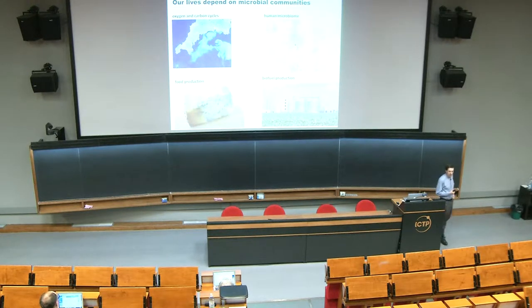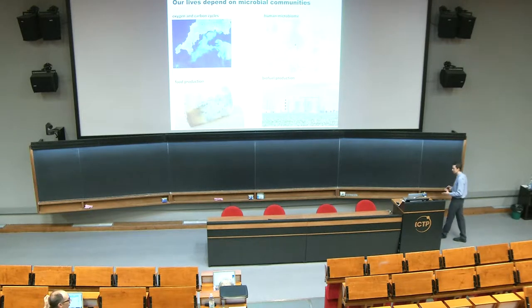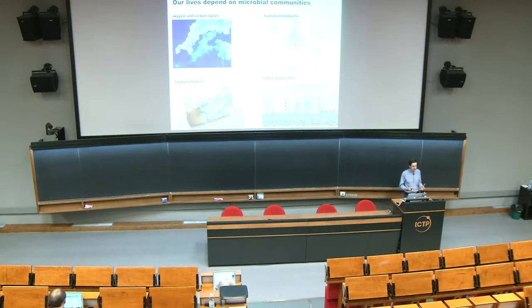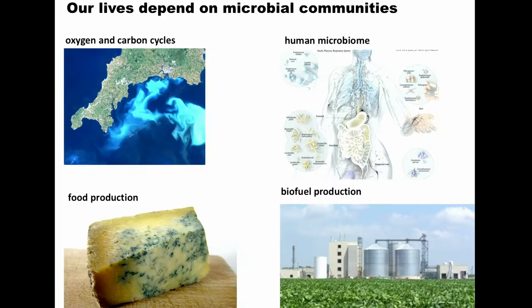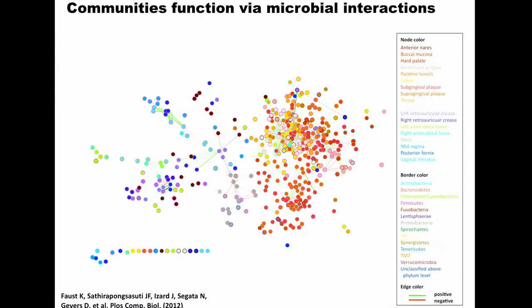People have been interested for a long time in understanding how microbes interact. You can construct interaction networks based on metabolic exchanges, based on time series data, based on experiments, or you can look at cross-sectional samples and infer correlations between microbes and interpret those as interactions. As a result, you typically end up with a network - like a human microbiome network based on cross-sectional correlations - that looks like a nice hairball. That's a typical result from these studies.